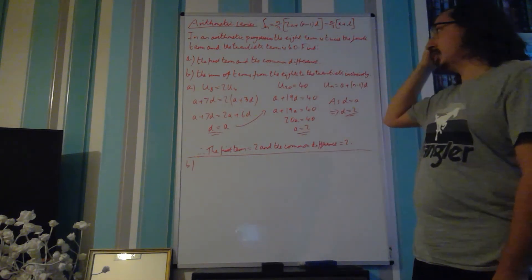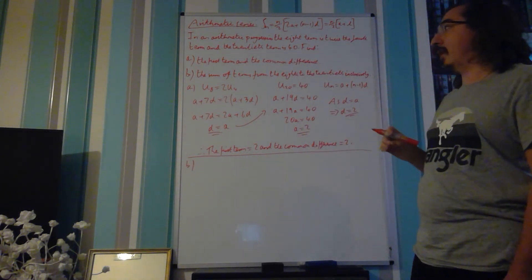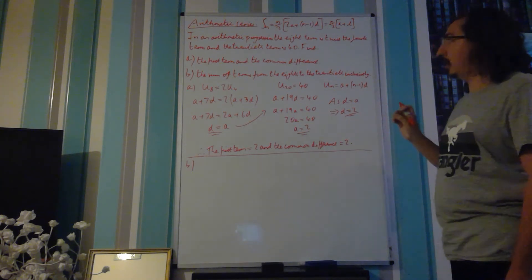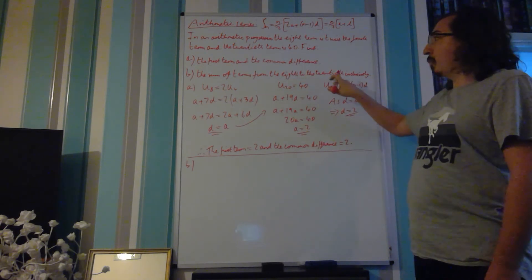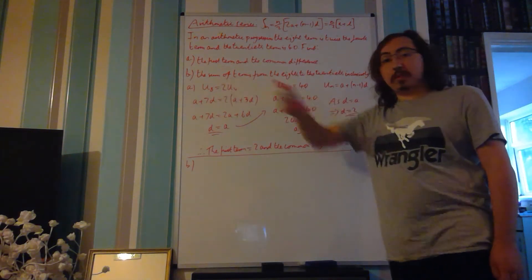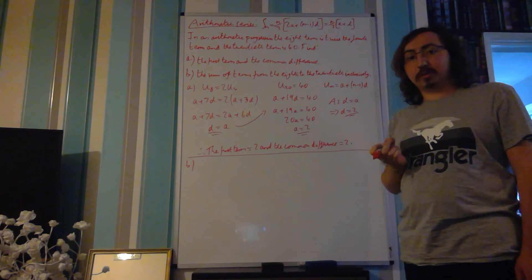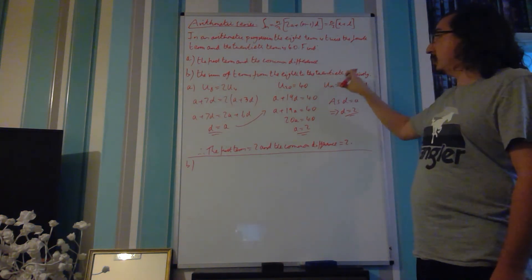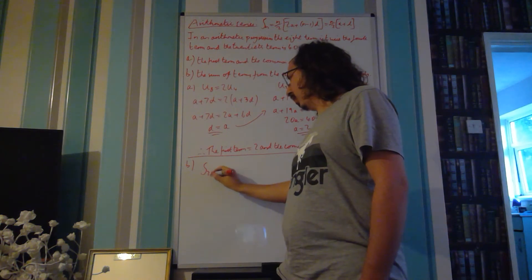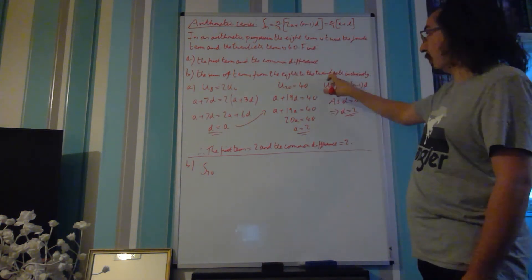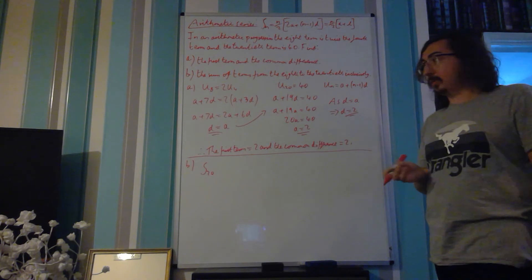Part B says we're after finding the sum of terms from the 8th to the 20th inclusively. So, we need to think about what this means. Well, first of all, we're looking at the sum, so it's going to be the summation formula. Ultimately, we're going to need to know the sum up to the 20th term, because that's what we're after knowing up to, and it's inclusive.